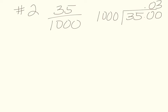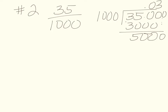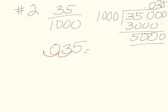Three times 1,000 is 3,000; subtract to get 500. Add another zero and drop it down — 1,000 goes into 5,000 five times. Our answer is 0.035, which we move the decimal point over twice to get 3.5%.